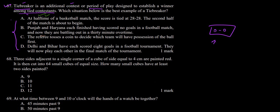We will also check options C and D. In option C, the referee tosses a coin to decide which team will have possession of the ball first. This appears to be a cricket match where the toss decides who bowls first. There is no tie between the teams — the match is just starting. So option C cannot be a correct answer.